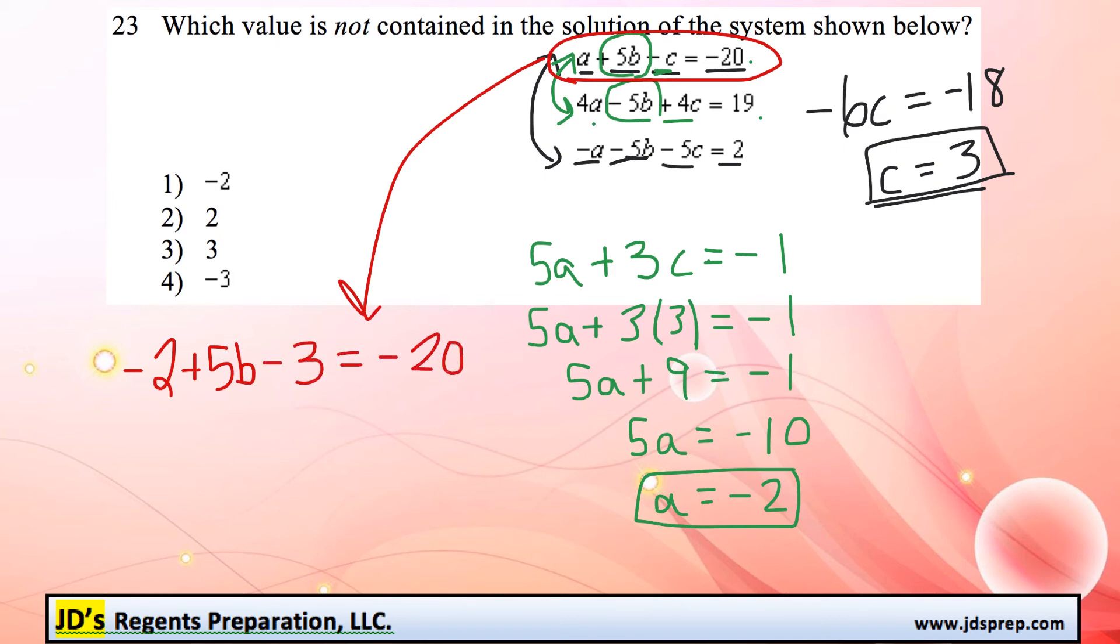So this is the same thing as 5b minus 5 equals negative 20. And we're going to add 5 to both sides to get 5b is equal to negative 15. And then dividing everything by 5, we get a b value of negative 3.